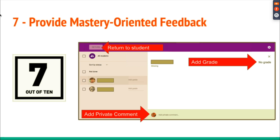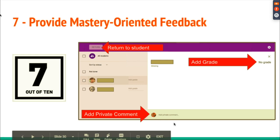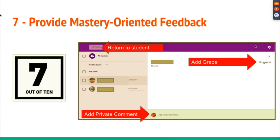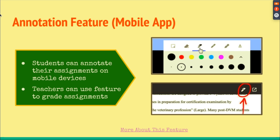Let's talk about providing mastery-oriented feedback. As we add more online components and blend technology into the classroom, we can't underestimate the ability to provide timely feedback. If you click on a specific student's name inside an assignment, you can see if they turned it in, add a private comment, and add a grade. It's private, so students won't see each other's feedback.